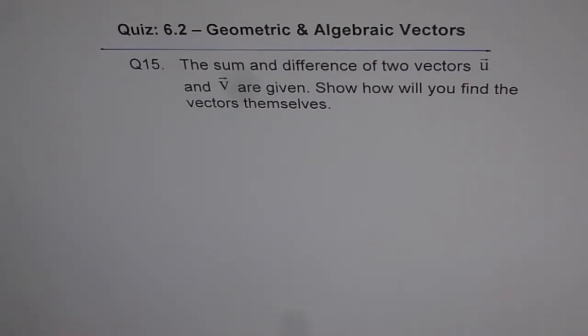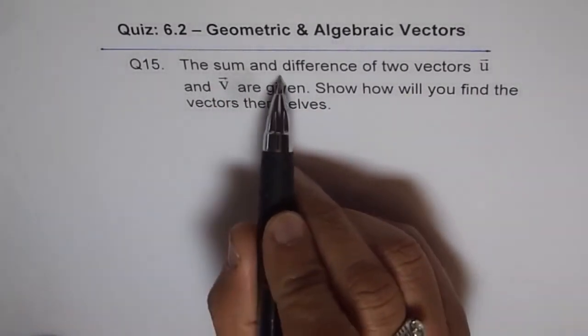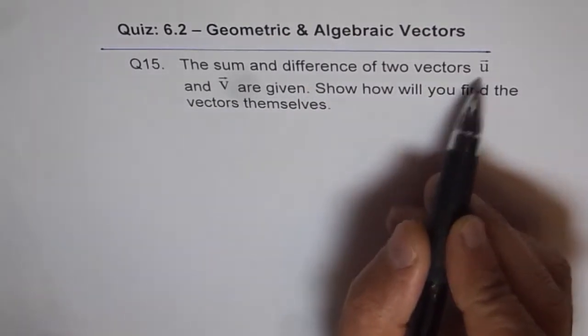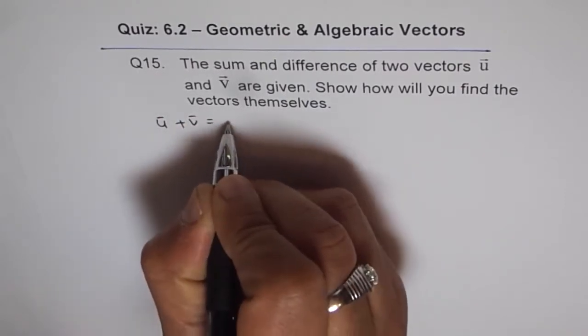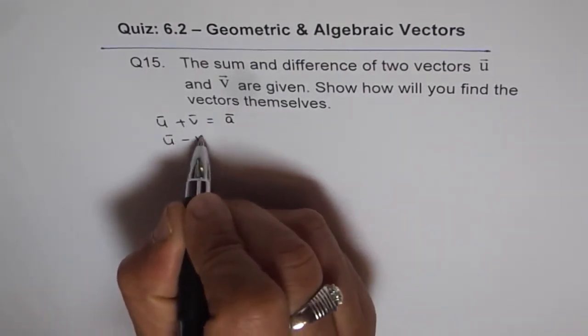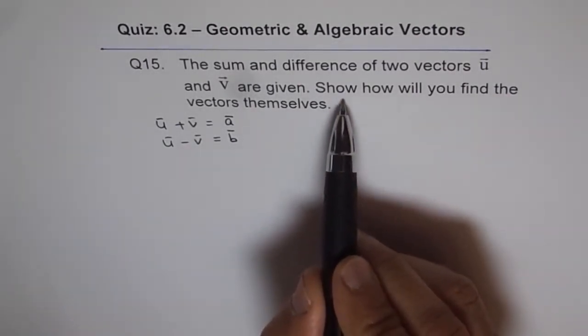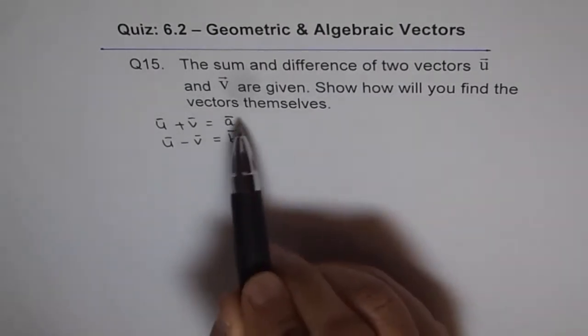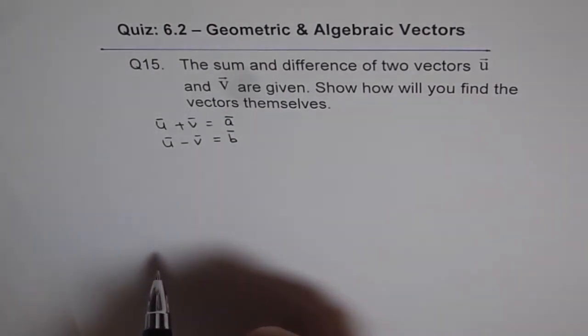One algebraic solution and another geometric solution. So let's see how we can provide these solutions. One way of doing it is like this: it says the sum and difference of two vectors u and v is given. It means that vector u plus v is given to us, let it be vector a. And difference u minus v is given to us, let us say it is b. So the question really is we need to show how will you find the vectors themselves, that is, how will you find u and v if you are given their sum and difference.